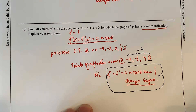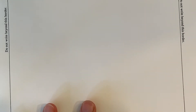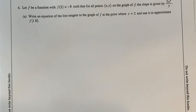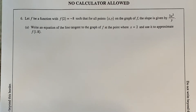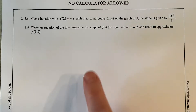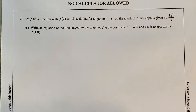Number six has occurred on every AP test in history. You are going to have to write an equation of a tangent line and probably use it to approximate a value, and you are going to have to solve a differential equation. It is just a given — it always occurs and it's probably worth a lot of the points you get.